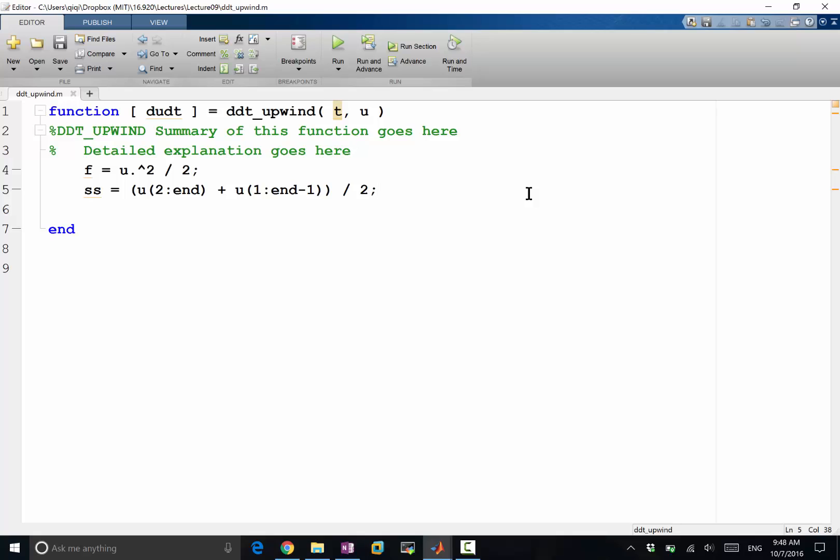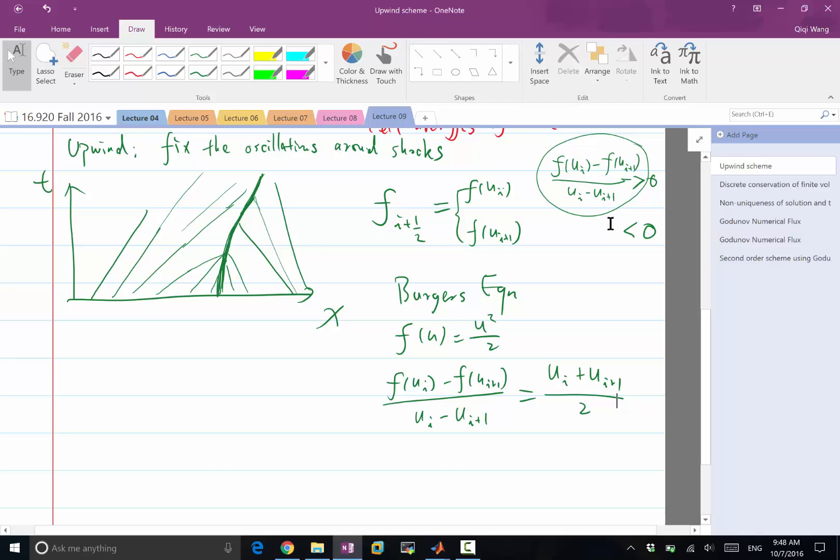If you don't have an analytical formula to use in general, you have to separate the case where ui is almost equal to ui plus 1. In that case, what is this ratio, delta f over delta u? The derivative of f to u. Generally, you have an epsilon criterion. If the difference between ui and ui plus 1 is less than 10 to the minus 6 or something, you use the derivative formula. If it's larger than that, you use the delta formula.